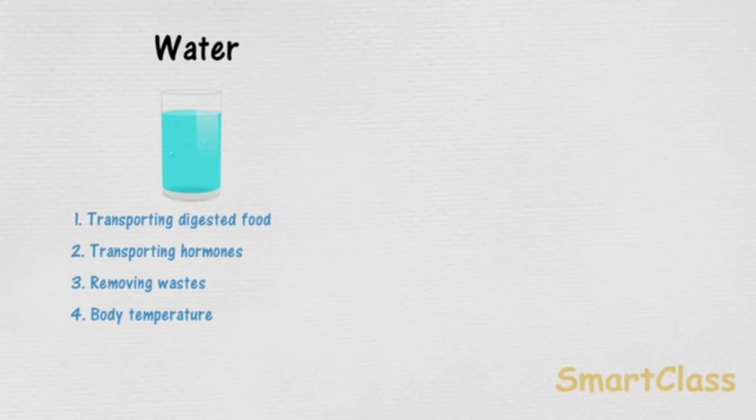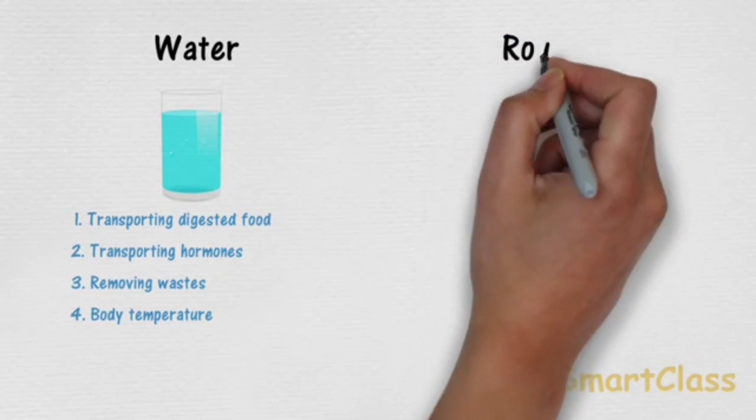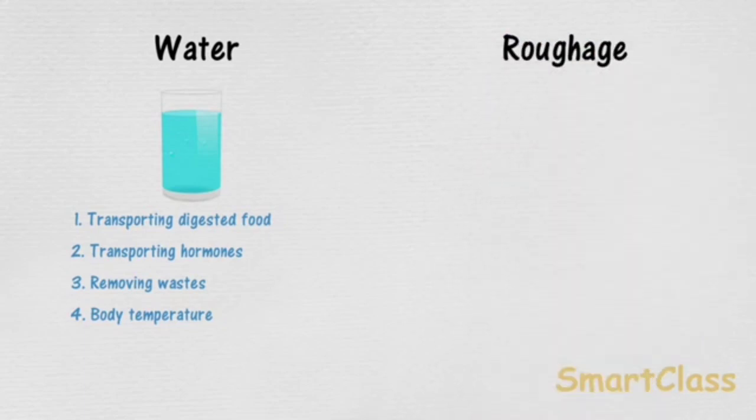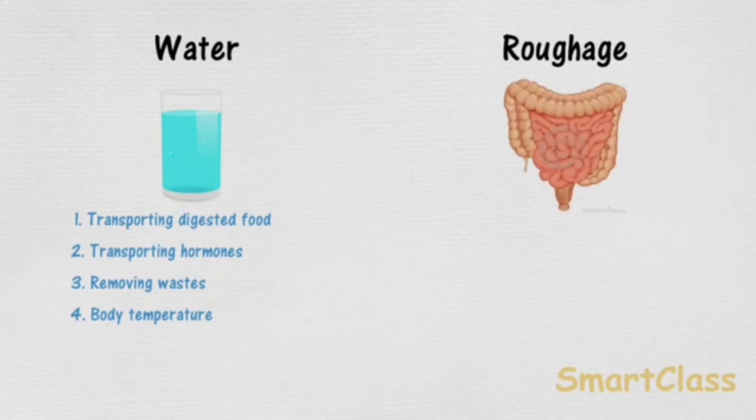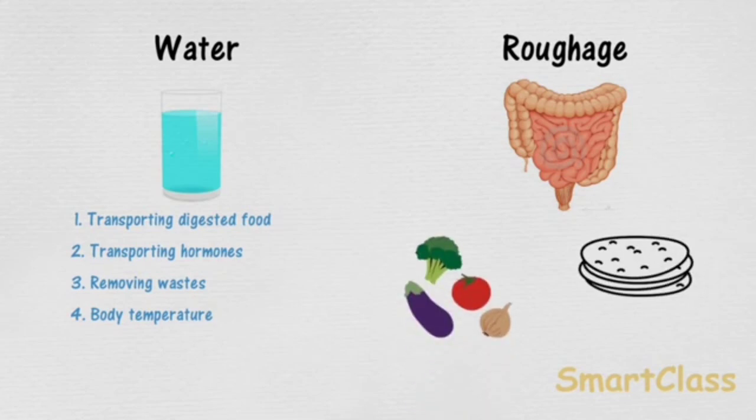Then roughage. Roughage is also known as dietary fibers and it helps our body to get rid of undigested food. All these are very essential for our body.